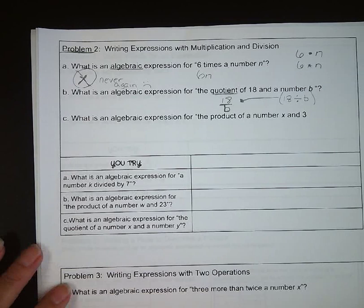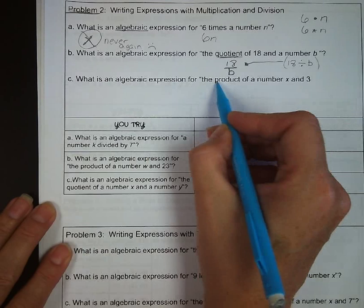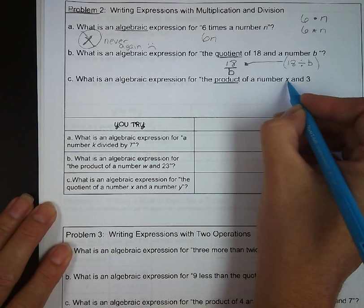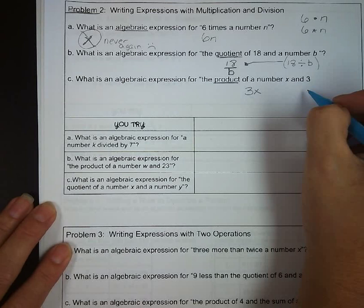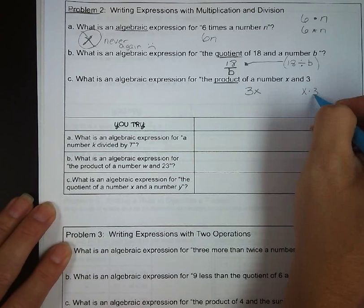What is an algebraic expression for the product of a number x and 3? So product, we are multiplying. We always put the coefficient in front of the variable, and we just write it like that, 3x. And you might start off writing what you see, and then fixing it so that it's proper algebraic format.